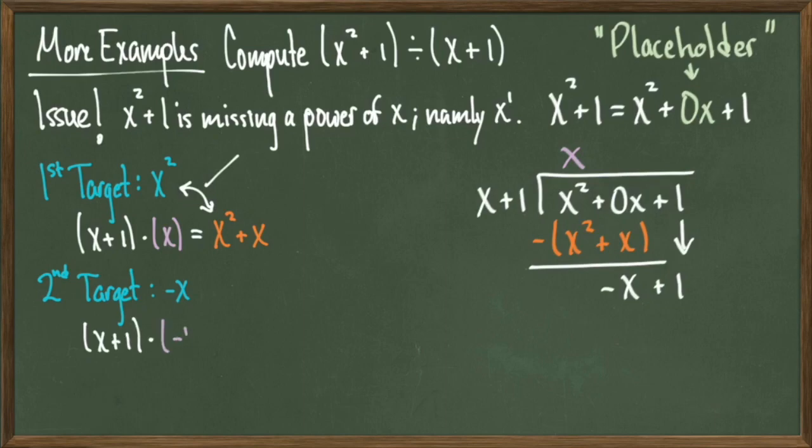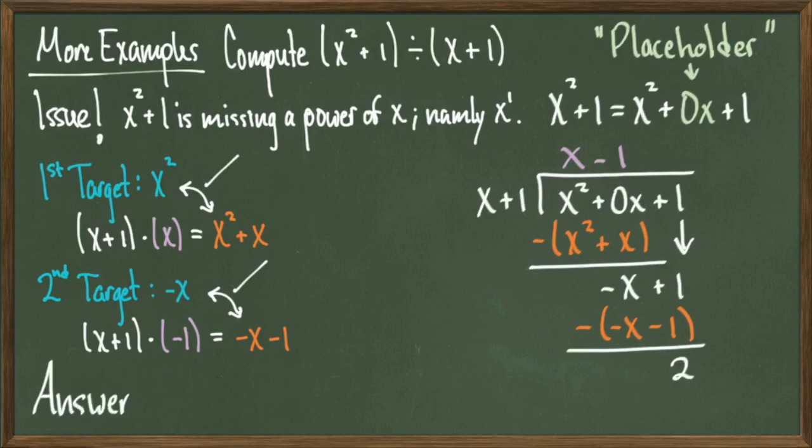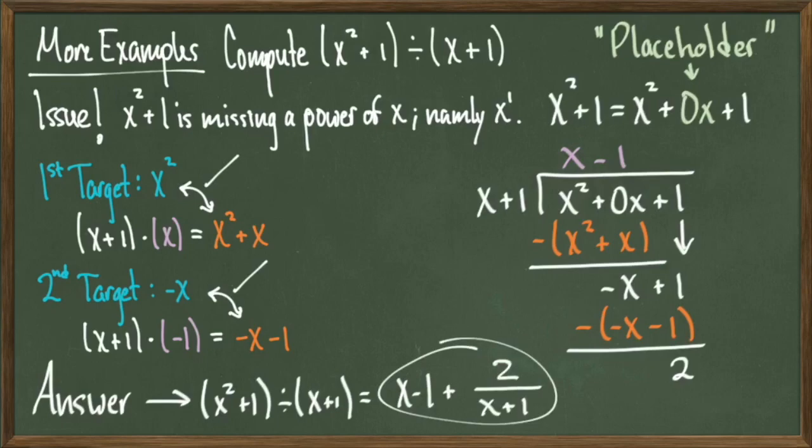Therefore, multiply x plus 1 by negative 1 to get minus x minus 1, which puts a minus 1 in the quotient. Once we subtract this product, there are no more terms to drop down. Therefore, we have a final answer of x minus 1 plus 2 divided by x plus 1.